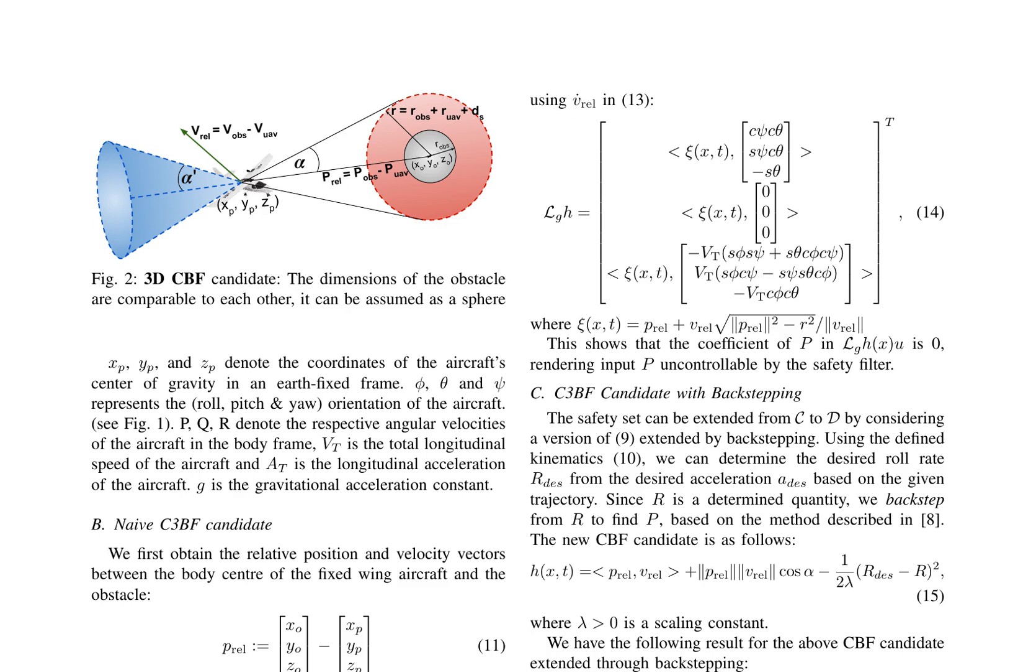This section presents a detailed analysis of the collision cone barrier function (CBF) candidate for a fixed-wing UAV model. The CBF candidate is designed to ensure safety and avoid collisions with obstacles. The relative position and velocity vectors between the UAV and the obstacle are first obtained using equations 11 and 12. The relative velocity vector is then used to calculate the Vrel term, which contains the inputs AT, P, Q, as shown in equation 13. The additional terms in equation 13 do not contribute to the calculation of LGH and are therefore not considered. Theorem 1 states that the proposed CBF candidate (9) with Prel, Vrel defined by (11) and (12) is a valid CBF defined for the set C. However, this CBF has a limitation in that it is only valid for the set C, as it can only alter Q but not P. This is verified by the construction of LGH in equation 14.